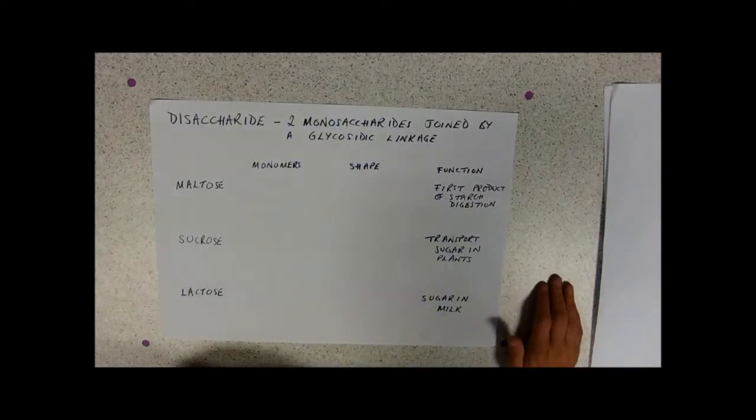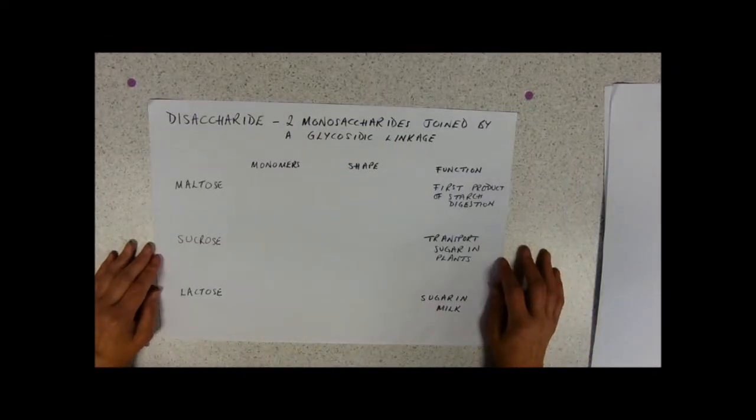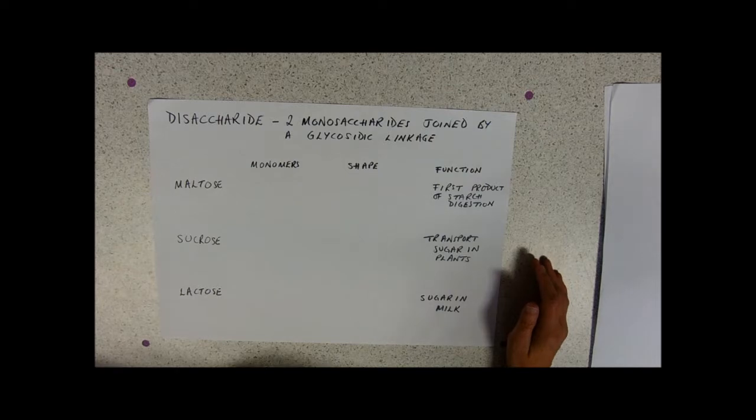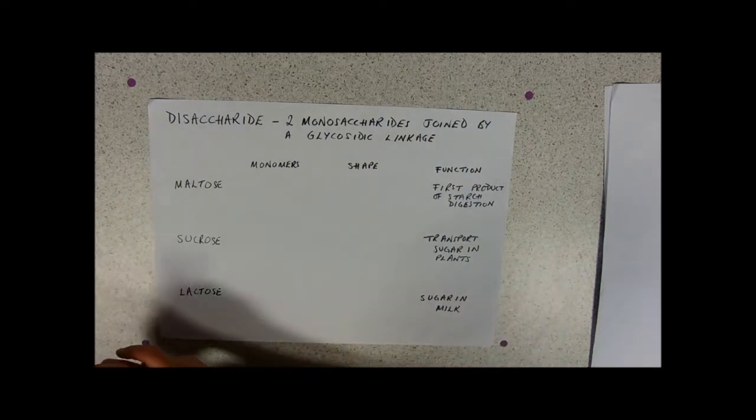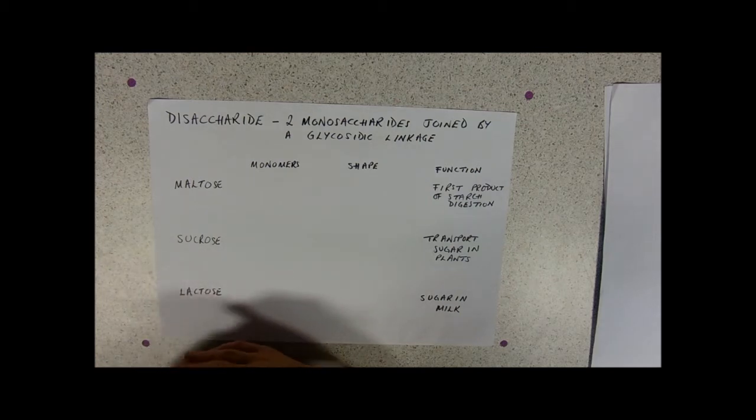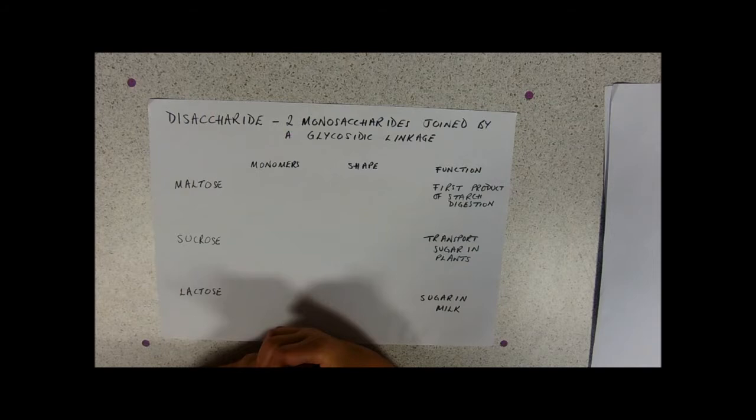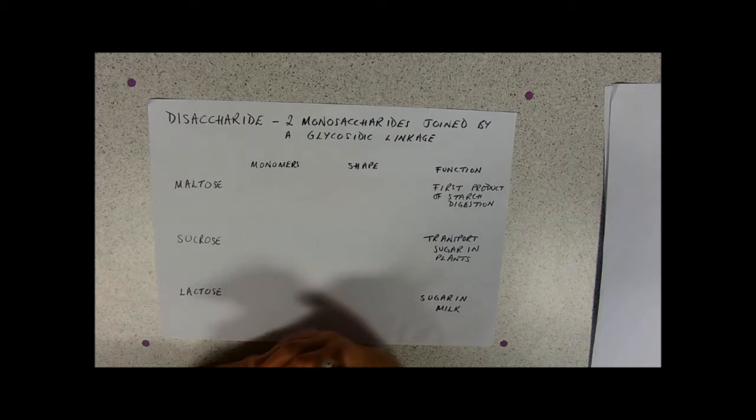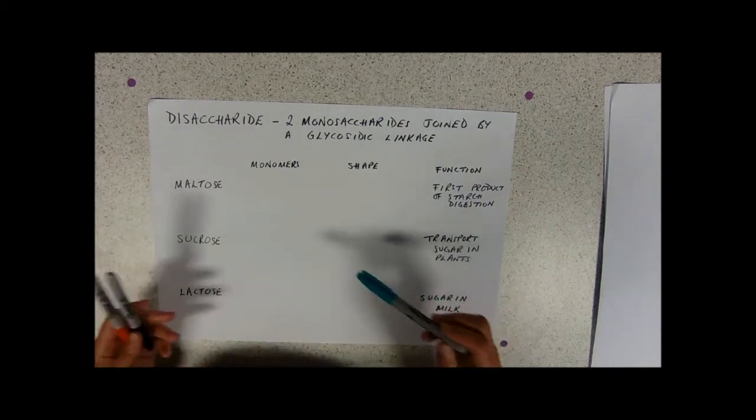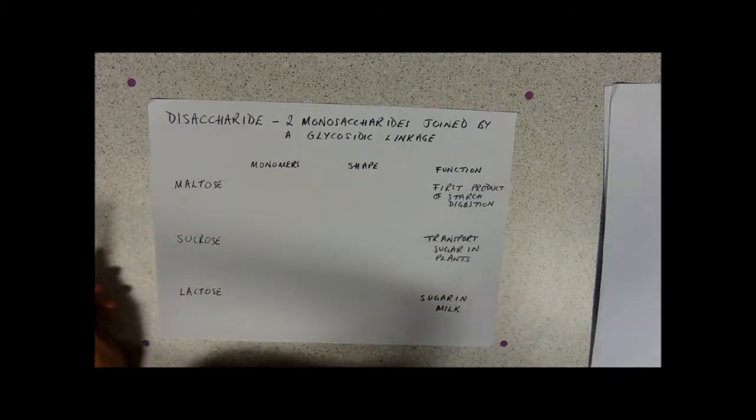This is a video on disaccharides. You'll remember that disaccharides are composed of two monosaccharides joined together. You need to know the name of that bond that joins monosaccharides together, and it's the same for polysaccharides. Glycosidic, meaning sugar linkage, is the bond found in carbohydrates.